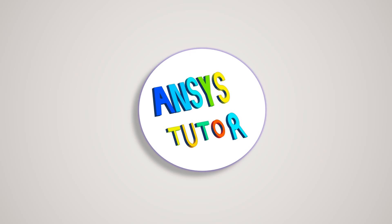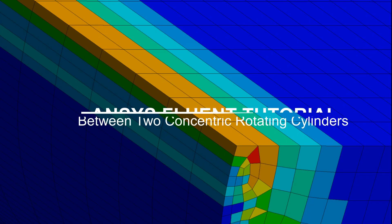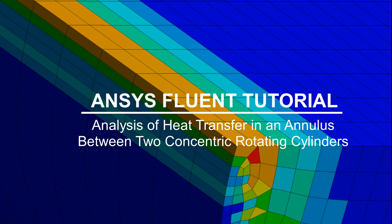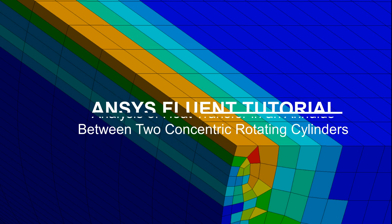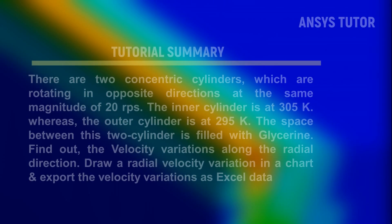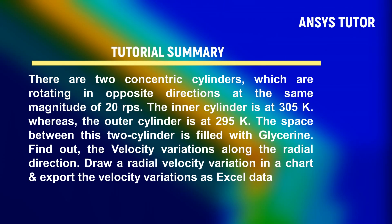Hello viewers, welcome to our YouTube channel. In this tutorial demonstration, we will see the analysis of heat transfer in an annulus between two concentric rotating cylinders. There are two concentric cylinders which are rotating in opposite directions at the same magnitude of 20 radians per second. The inner cylinder is at 305 Kelvin, whereas the outer cylinder is 295 Kelvin. The space between these two cylinders is filled with glycerin. Find out the velocity variations along the radial direction, draw a radial velocity variation in a chart and export the velocity variations as Excel data.